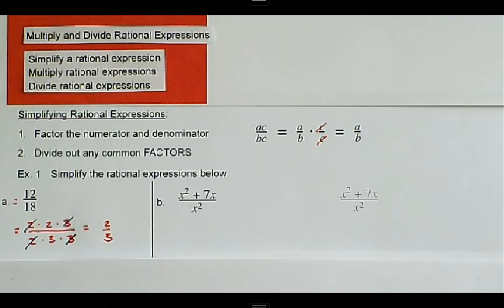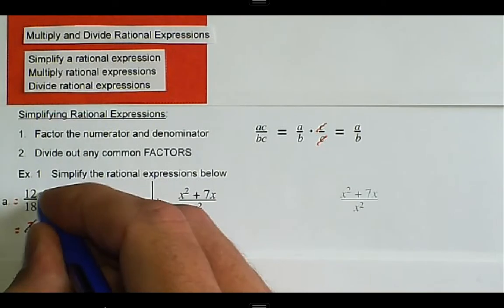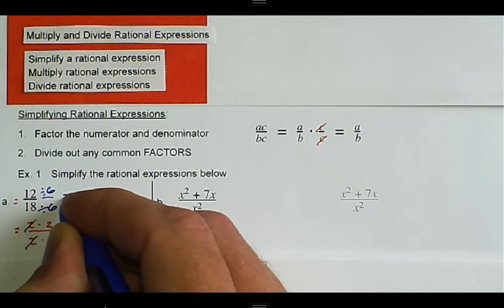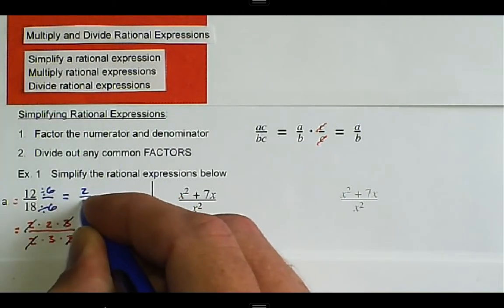Another way that you can do it, if you'd like, is you can say these are both divisible by 6, so we can divide the numerator and the denominator by 6, and that will still give us 2 over 3.